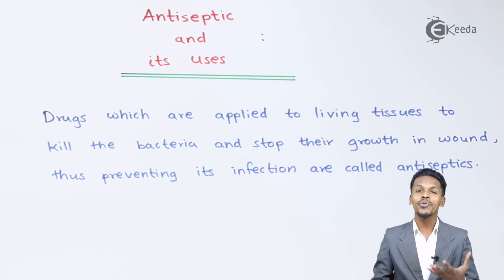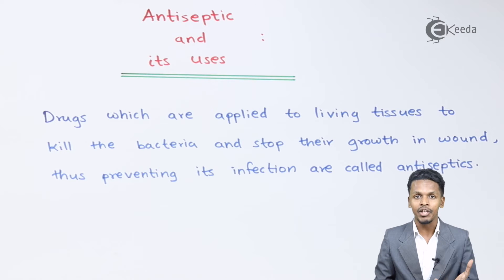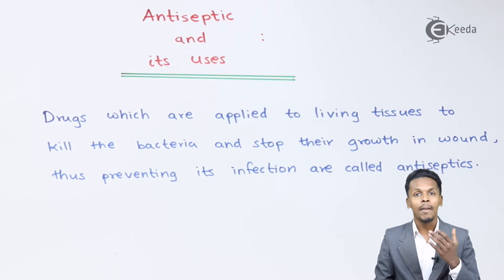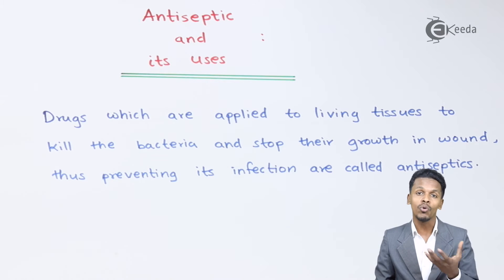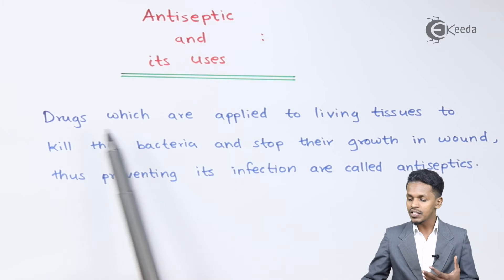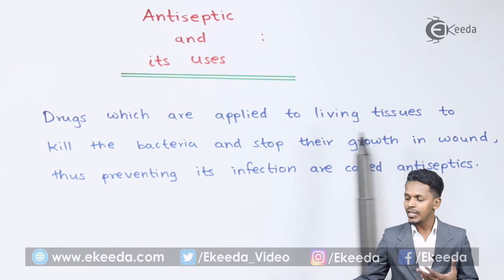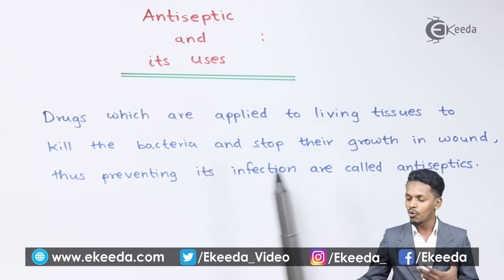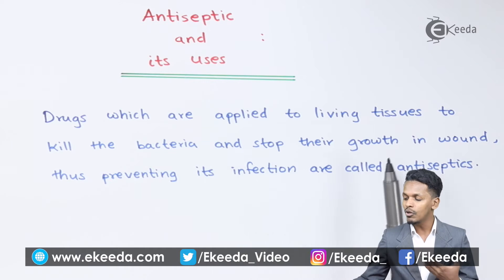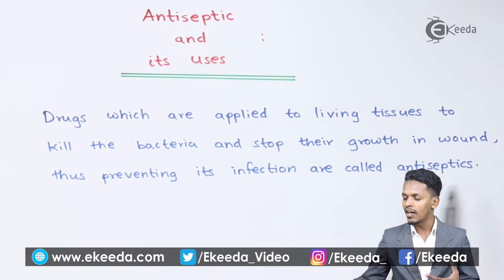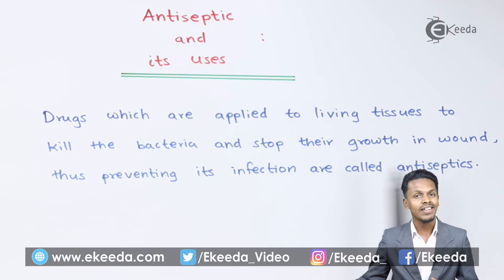Now we are going to talk about antiseptics. Antiseptics come under the category of antimicrobials because they have a tendency to kill microorganisms or to stop the growth of microorganisms. The drugs which are applied to the living tissue to kill the bacteria or to stop the growth, thus preventing infection, are called antiseptics.